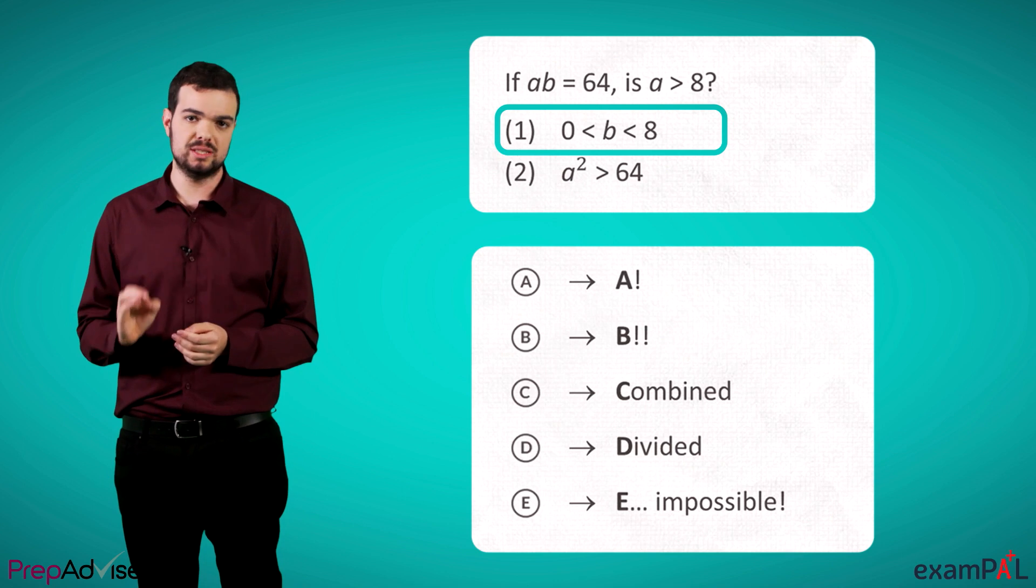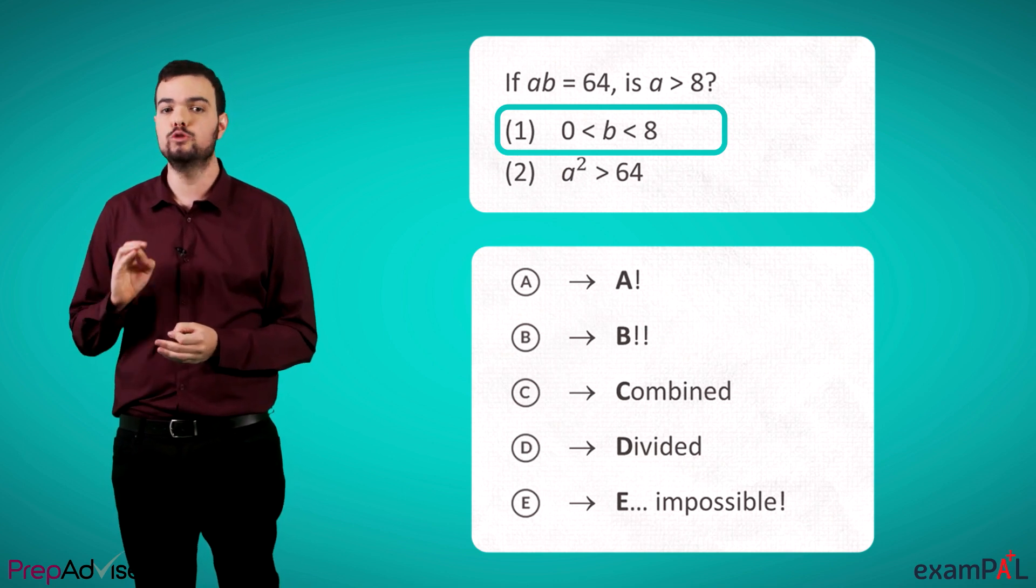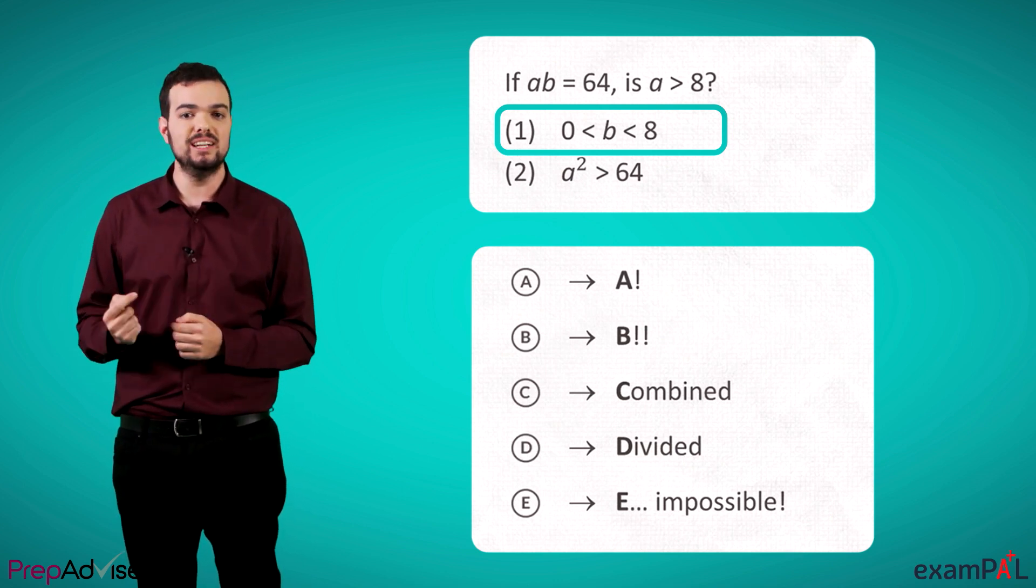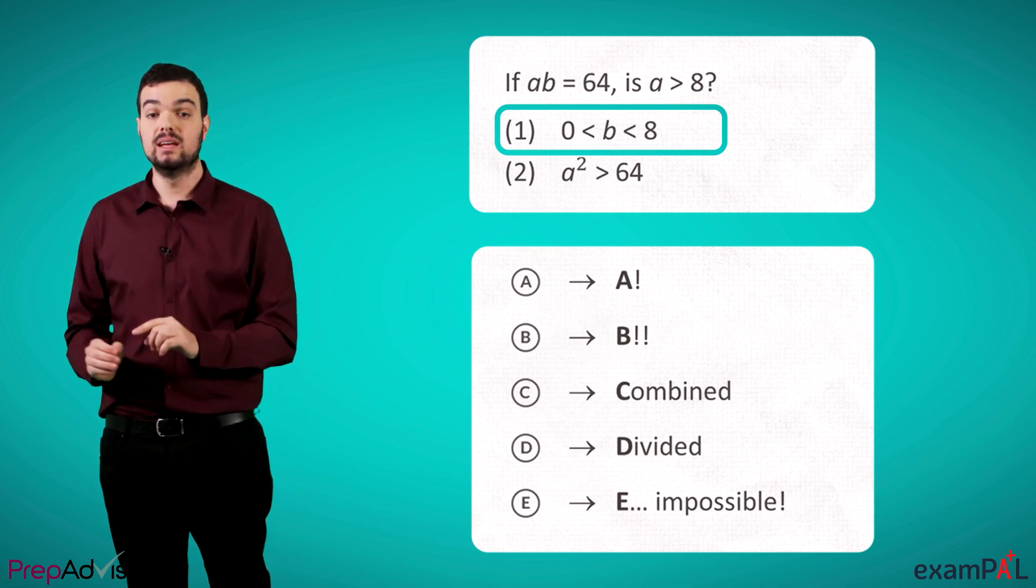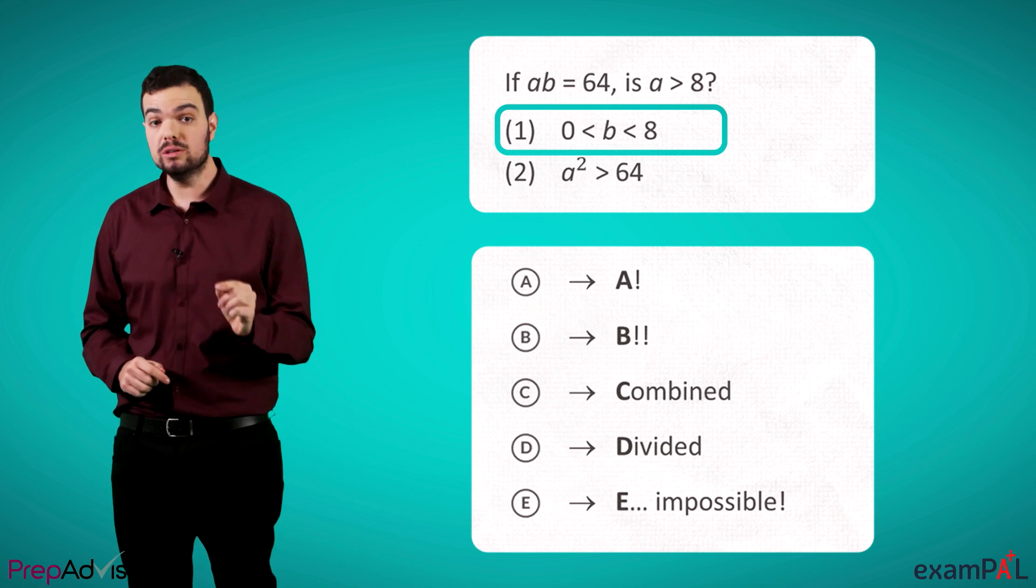Second, when we get ranges, it's often useful to use an extreme in order to figure out the logic for the entire range. Let's pretend b equals 8. If that's the case, a will also be 8.